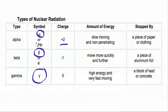Gamma radiation is very high energy and very fast moving. To stop gamma radiation, you need a block of lead or concrete. You'll learn when you talk about the electromagnetic spectrum that gamma radiation is an electromagnetic wave, so it has no mass.